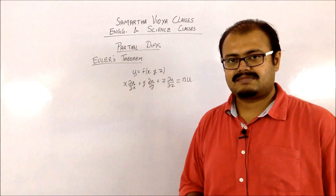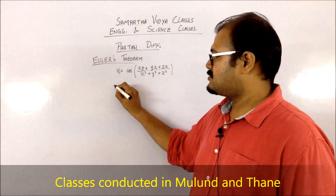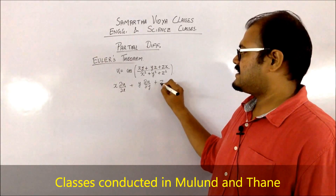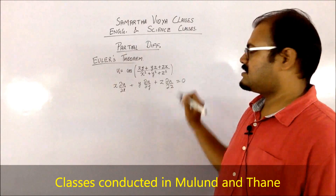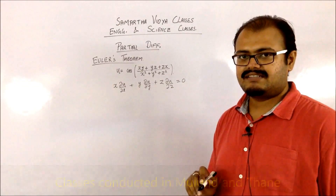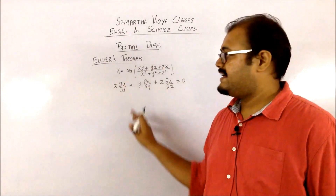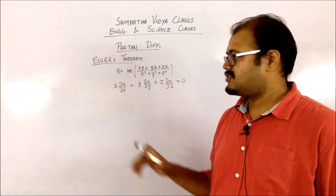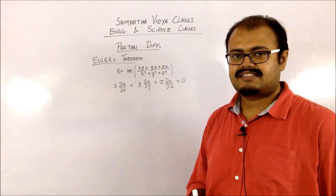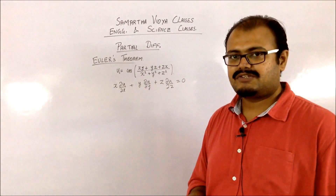Let us see a problem based on this theorem. The question gives u as a function of x, y, z and asks us to prove that x·(∂u/∂x) + y·(∂u/∂y) + z·(∂u/∂z) = 0. To understand whether the question comes under Euler's theorem, first see the terms involved in the proof — it is the derivative of the function with respect to each variable multiplied by that variable and their addition. So it is most probably an Euler's theorem problem.